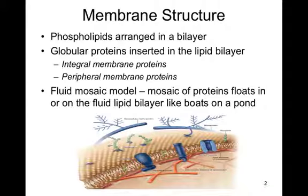An early model of the phospholipid bilayer portrayed a membrane as a sandwich in which the phospholipid bilayer was like the meat between two layers of globular protein, the bread. But in 1972, the fluid mosaic model was proposed and revised this model. They proposed that the globular proteins were inserted into the lipid bilayer, not as a sandwich on the outside, and that the nonpolar segments of these proteins were in contact with the nonpolar interior portion of the bilayer.